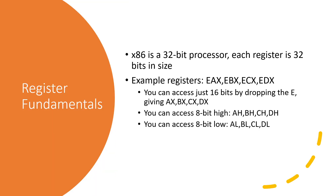In addition to the modes, we also need to understand a little bit about some register fundamentals. x86 is a 32-bit processor, which means that each register is 32 bits in size. The registers are typically labeled as EAX, EBX, ECX, and EDX. In the next slide I have an example of some common registers that are typically used — there are actually quite a number of registers that exist, but we'll mostly stick to the most common ones and introduce others as they're needed.